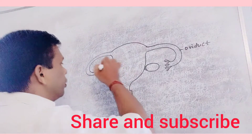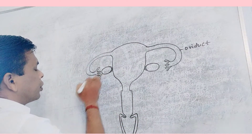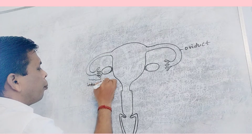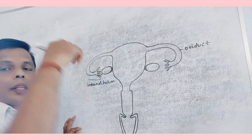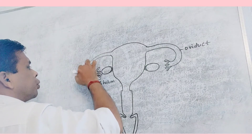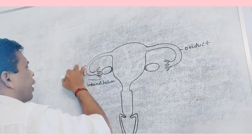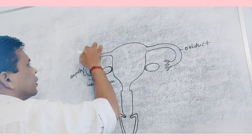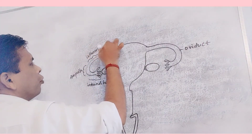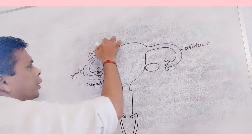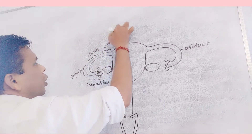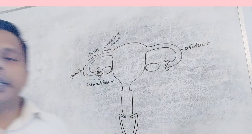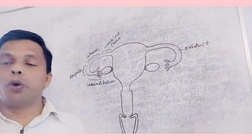The primary part which is funnel-shaped is the infundibulum. Next to it, this part is the ampulla. Next part is the isthmus, and the part which is connected with the uterus is the uterine part. So these are the four different parts of the oviducts.